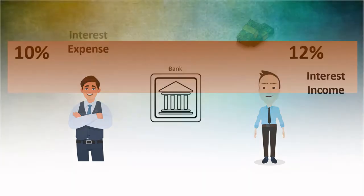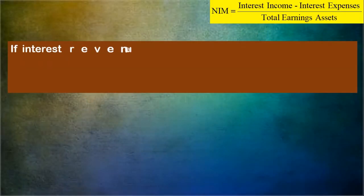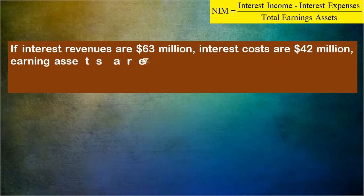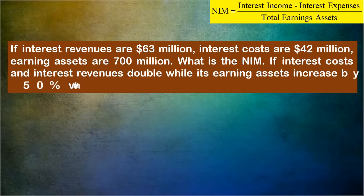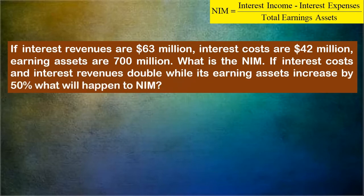Now let's do the math. If interest revenues are 63 million, interest costs are 42 million, and earning assets are 700 million, what is the net interest margin? The second part is: if interest costs and interest revenues double while earning assets increase by 50 percent, what will happen to the net interest margin?